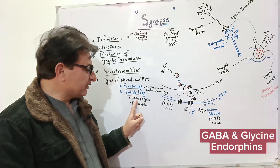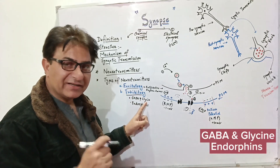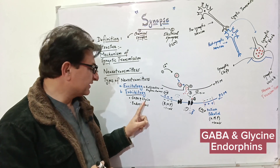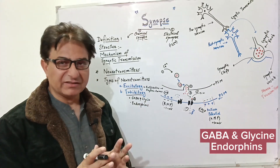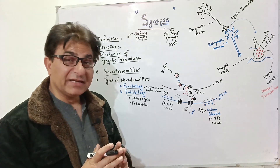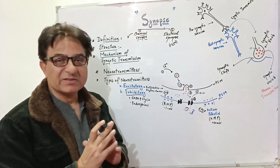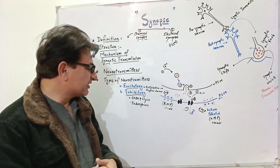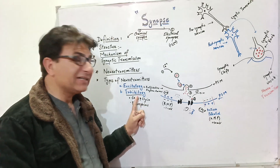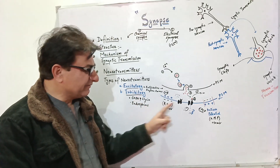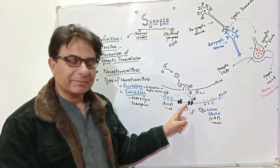Examples of inhibitory neurotransmitters include GABA, glycine, and endorphins. Endorphins prevent the feeling of pain through inhibition of certain receptors in the central nervous system. These inhibitory neurotransmitters inhibit transmission through the post-synaptic membrane.